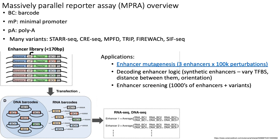Over the past few years, a number of so-called massively parallel reporter assays, or MPRAs, have been developed. Here we'll only talk about the first major one to be developed, because once you understand how this first MPRA works, it's easy to understand how the rest work. The idea of the MPRA assay is that you start by finding a set on the order of thousands or tens of thousands of candidate enhancer sequences that you want to test. In this particular assay, your enhancers have to be somewhere on the order of 170 base pairs or less, and you synthesize these enhancer sequences on a programmable microarray.